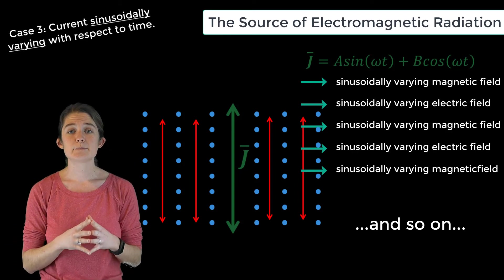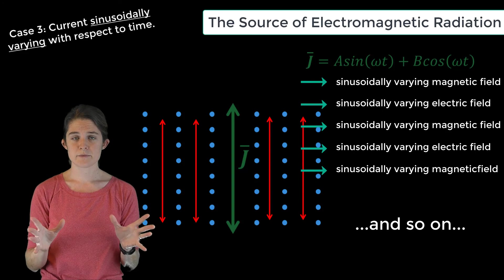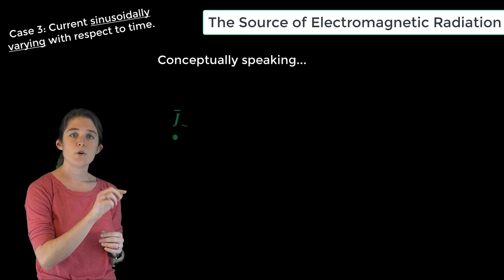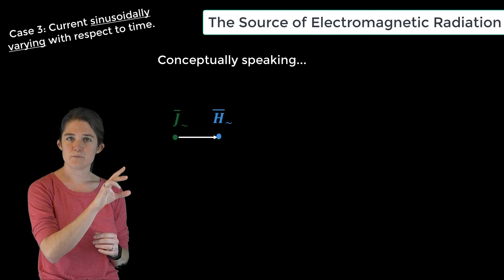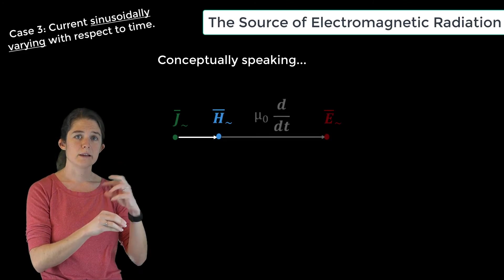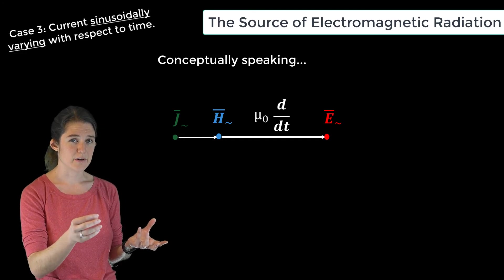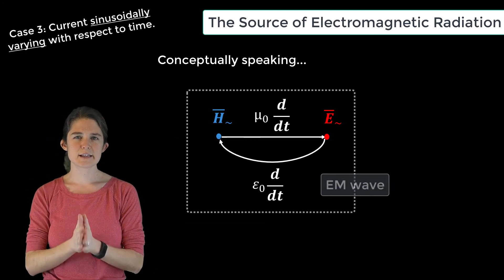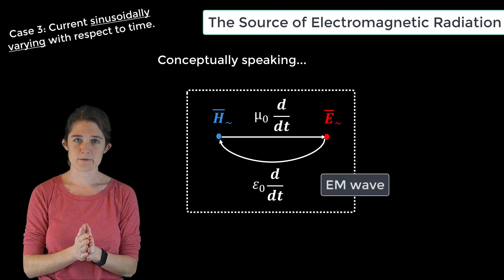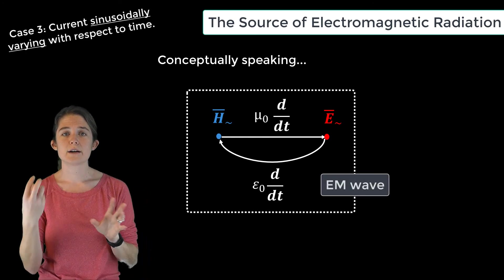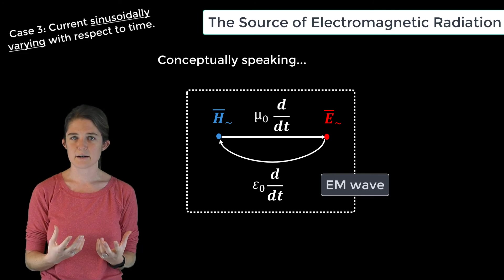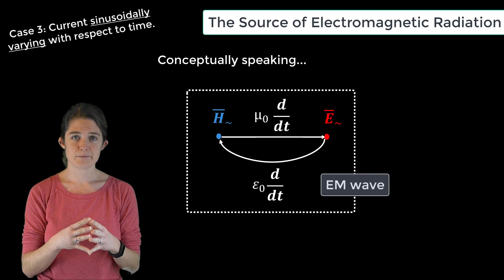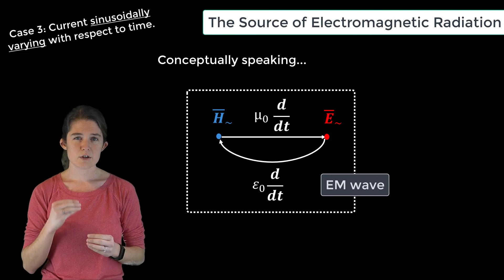Since you can take the derivative of a sinusoid an infinite number of times and still keep a sinusoid, this process never ends. Conceptually, a sinusoidal current gives rise to a magnetic field, which by its time derivative leads to an electric field, which by its time derivative gives rise to a magnetic field, and so on. This is the self-propagating electromagnetic wave — it travels forward through oscillation of its mutually dependent electric and magnetic fields and no longer needs any input from the current source. It is self-sustaining.